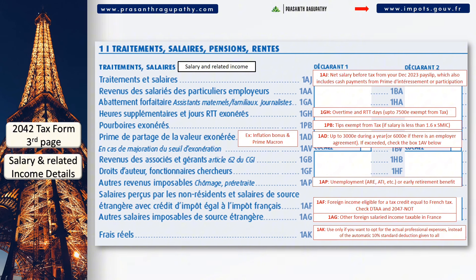If you received unemployment benefits during 2023, you must add them in line 1AP. If you worked as an intern or an apprentice, you must only declare the part of the salary that exceeds 20,815 euros in 1AG. There is a 10% standard deduction applied to everyone, but if your total professional expenses are higher than this 10%, you can choose the frais réels option by entering the total expenses in line 1AK.